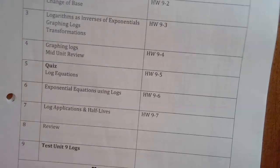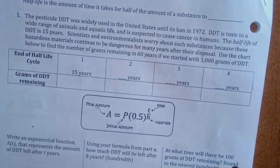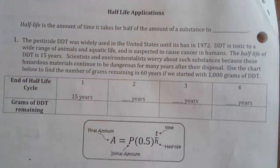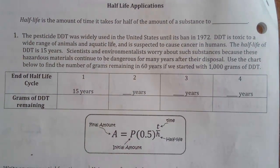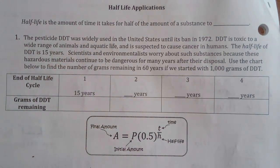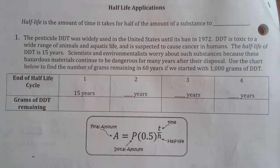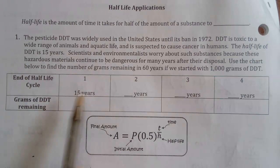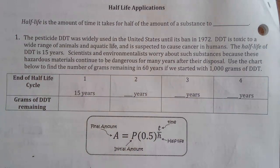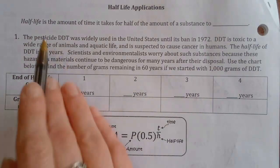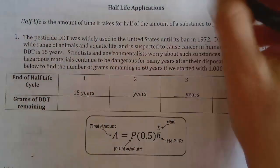Now half-life — something you probably discussed in science class. In science the ratios are usually nice equal increments, but now that we know logs we can find half-life or find values between two half-lives. Half-life is the amount of time it takes for half of a substance to decay.